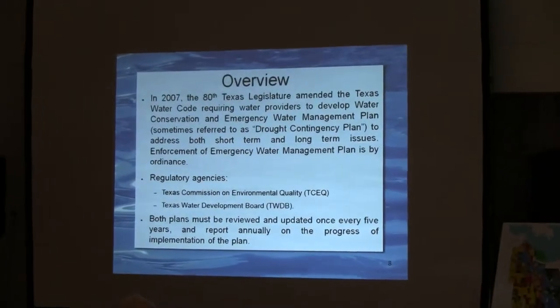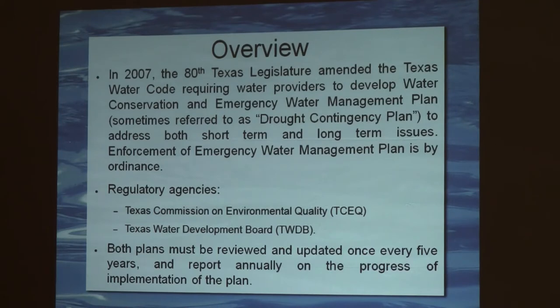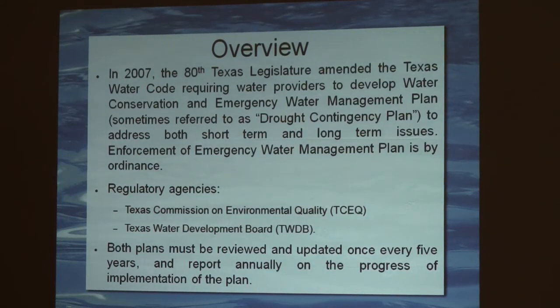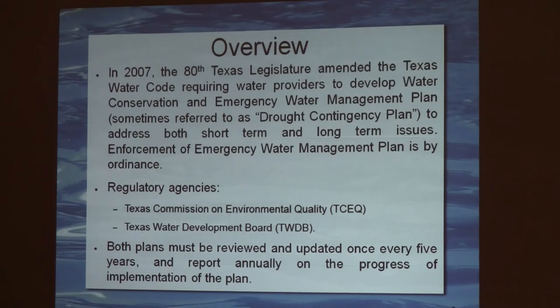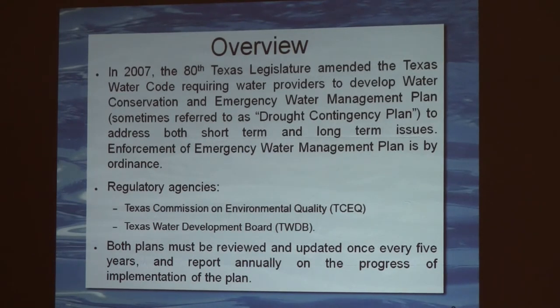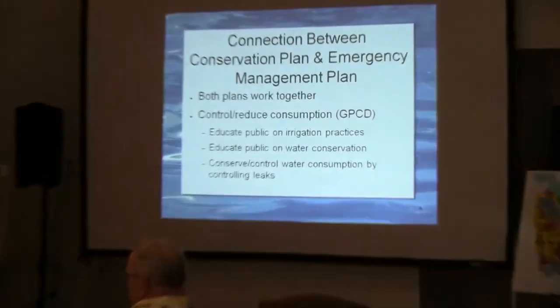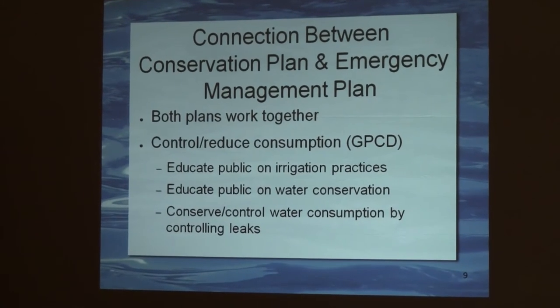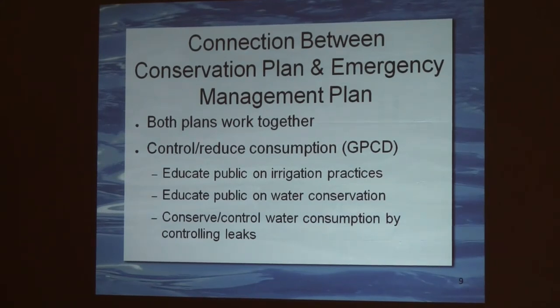This is a brief overview of what is required by the state water code. We have to submit a drought emergency water management plan and a conservation plan every five years. The regulatory agencies are the TCEQ and the Water Development Board. Both plans must be updated every five years — we start about year three to get it done, so it's about every three years we work on it. Both plans work together and are used to control and reduce consumption — gallons per capita per day. The primary process is to educate and improve irrigation practices.